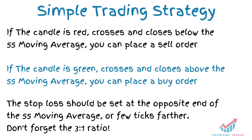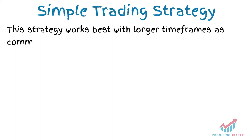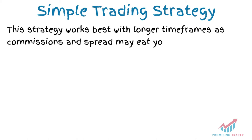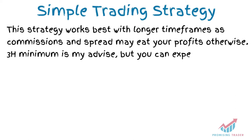Your stop loss is the maximum amount of money you are willing to lose. Remember to keep an estimated 3-to-1 ratio, meaning your stop loss should be one third of where you foresee the price to go. This is the strategy, as simple as that. The 55 EMA strategy should be used on relatively long time frames. The problem with short time frames like one minute is that commissions and spread can eat into or eliminate your profit from a crossover. I advise to use this strategy on at least a 3-hour chart. My favorite is the 6-hour.